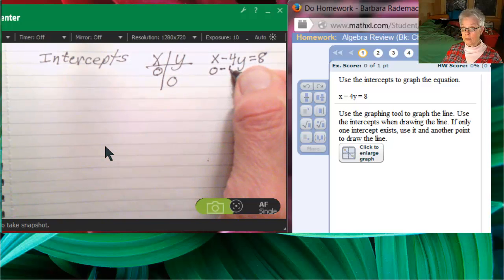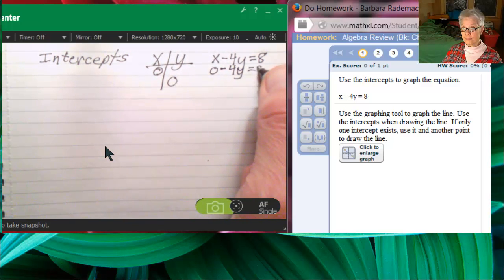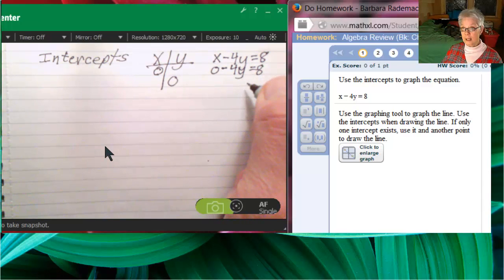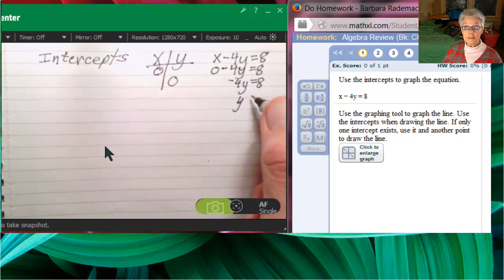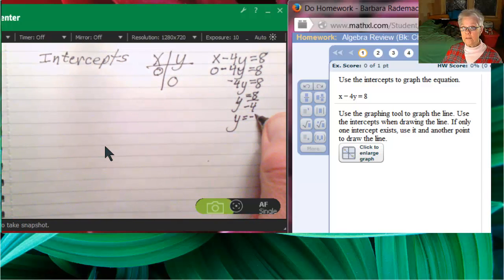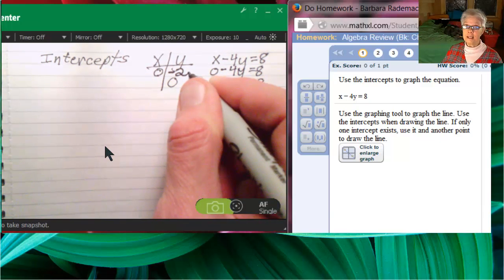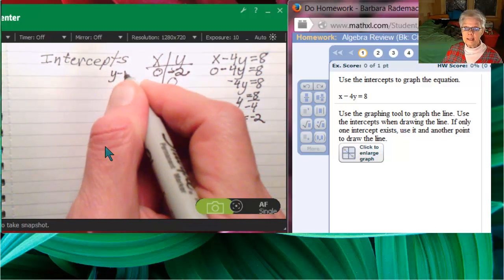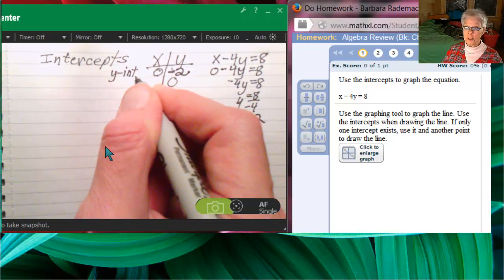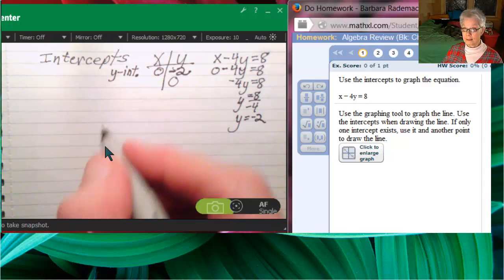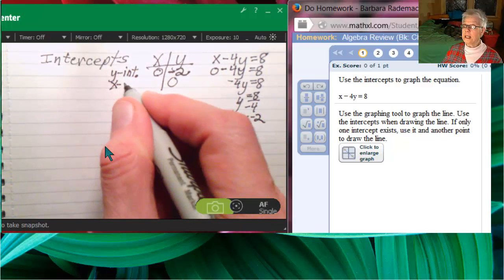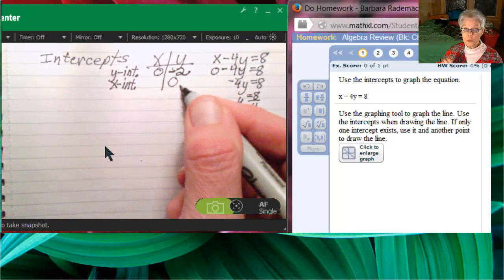So let's let x equals zero. That will leave us with negative 4y equals 8. Divide both sides by negative four and we'll find out that y is negative 2. So if x is zero, then y is negative 2. This is the y-intercept where the line crosses the y-axis. You must write these as points. You must write them with parentheses.